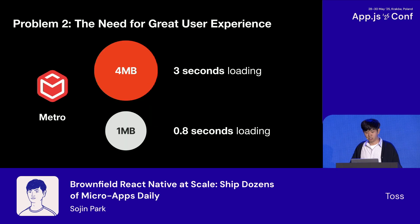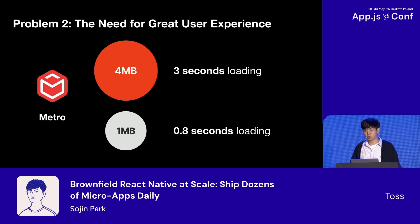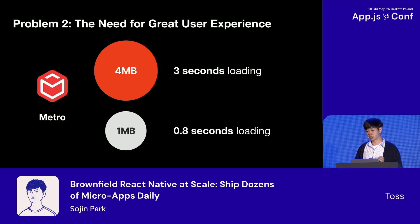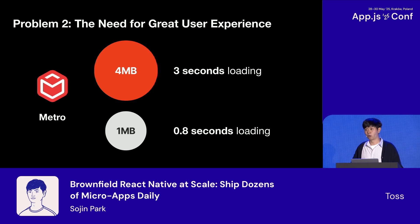Bundle size directly impacted our initial loading experience. For example, a JavaScript bundle around four megabytes took around three seconds to load on low-end Android phones. But reducing that size to a megabyte brought loading time down to around 0.8 seconds. Since we are a brownfield app, React Native views are created on demand when users navigate to them — so initial loading time is really critical for us. Users expect instant transitions, not white loading screens between features. Bundle size wasn't just nice to have — it was critical for our user experience.